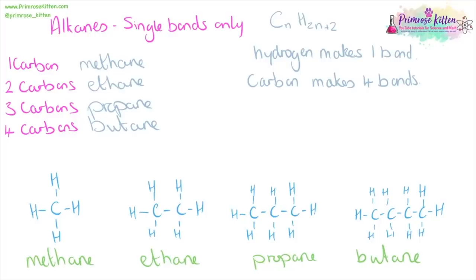You need to know the names and be able to recognize the pictures of these. The formula for these follows the general formula CₙH₂ₙ₊₂. So methane has one carbon and four hydrogens, ethane has two carbons and six hydrogens, propane three carbons and eight hydrogens, and butane four carbons and ten hydrogens.